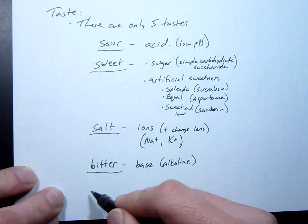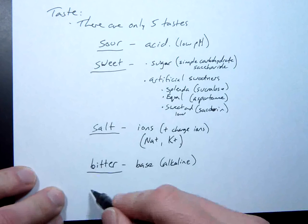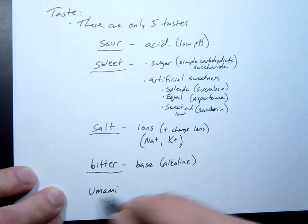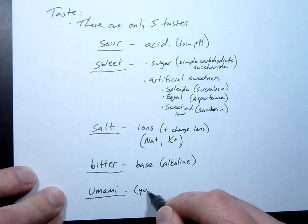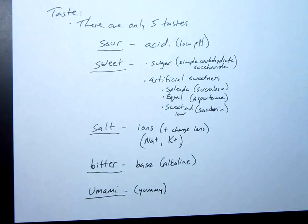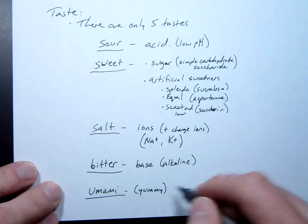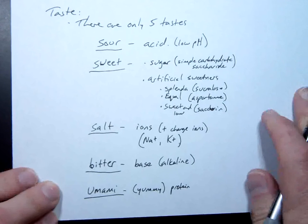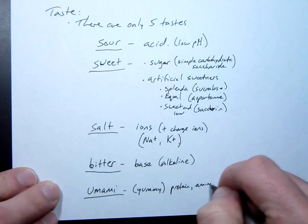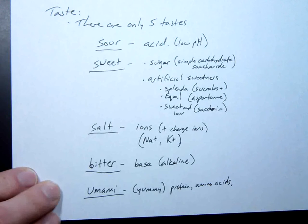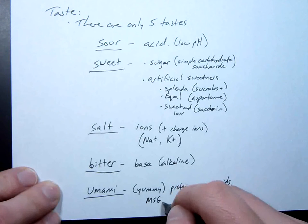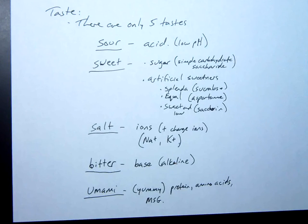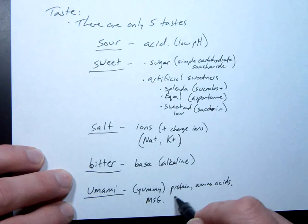The last one is one you probably learned yesterday. Umami. There's a Japanese word for yummy. Salt, sour, sweet, bitter, and yummy. This is when you're tasting proteins and amino acids. In addition, it could be things like MSG, as long as you're not allergic to it. Monosodium glutamate, which is an alteration of an amino acid. This right here is savory.